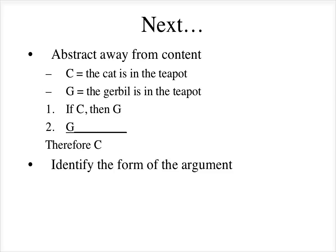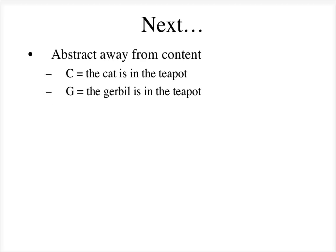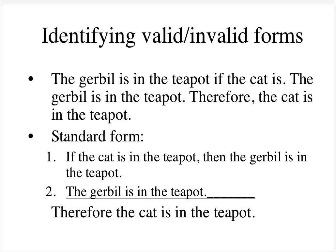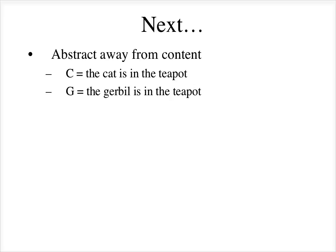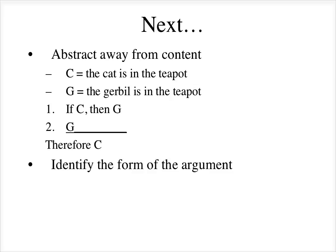We can much more easily identify the form of the argument this way. Once you get good at it, you can just look at it in standard form and recognize what form it's an instance of. But this step of abstracting away from content is really helpful. This form of argument is called affirming the consequent, because we're affirming the consequent.